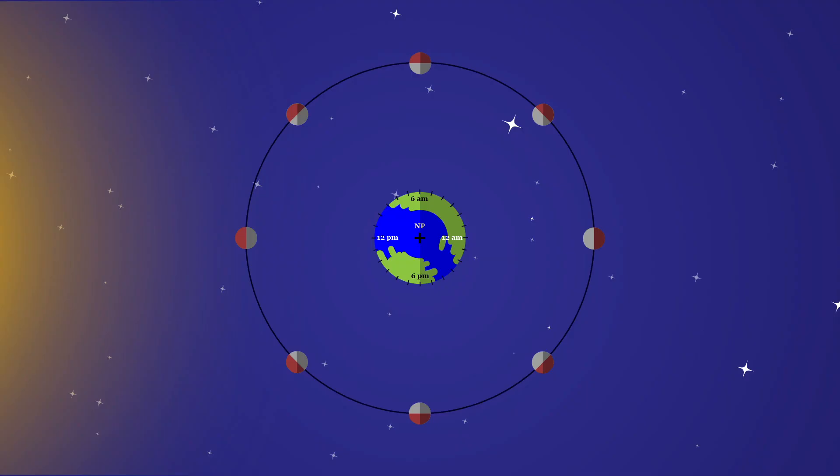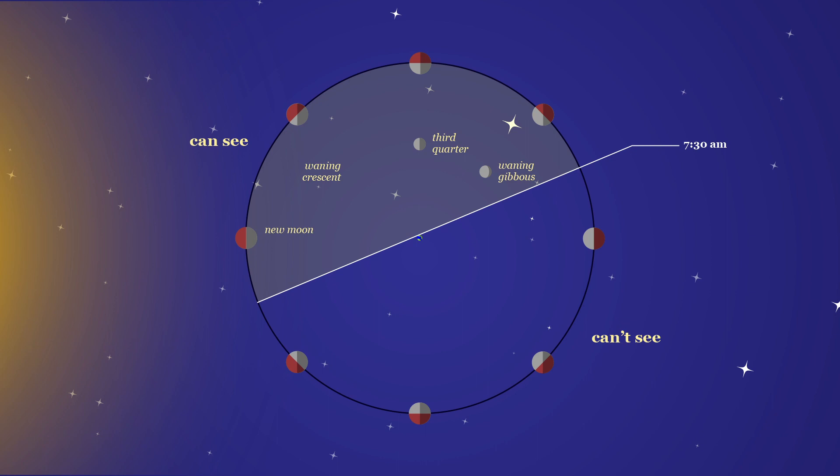We return to our graphic of the north celestial pole view of the lunar orbit and draw in a tangent plane for an observer in that time zone on Earth. Note that the phases of waning gibbous, third quarter, waning crescent, and new moon could be seen.